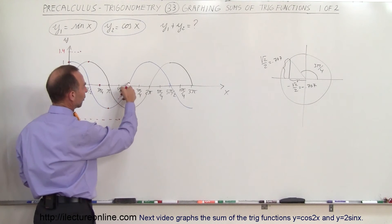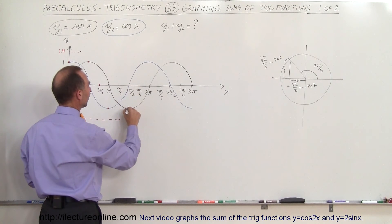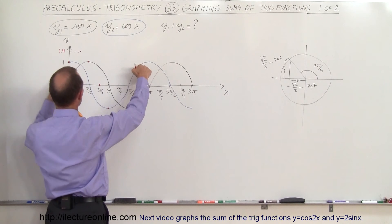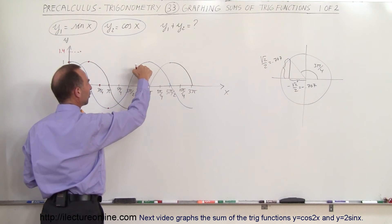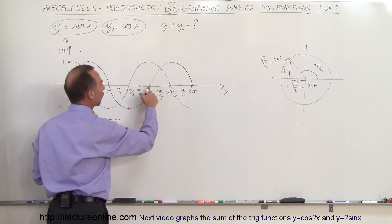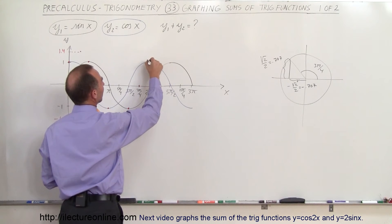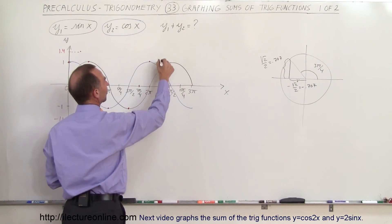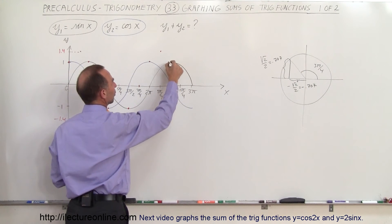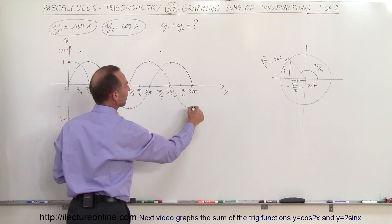And then coming back over here, 3 pi over 2, notice that the cosine is 0 and the sine is negative 1. So you add them together, you get negative 1. Over here, the cosine is plus 0.7 and the sine is minus 0.7, so they cancel each other out. You get 0. Over here, you can see that the sine is 0 and the cosine is 1. Over here, they're both 0.707, so they both add up to about 1.4. Here we have 1 plus 0, gives you 1. And here, they cancel each other out again, and over here, it is negative 1.